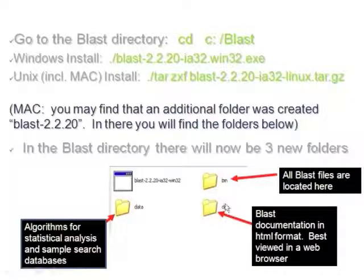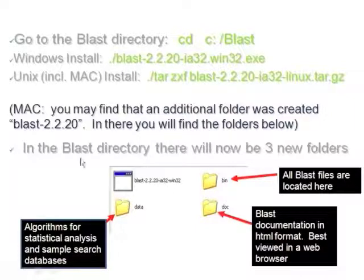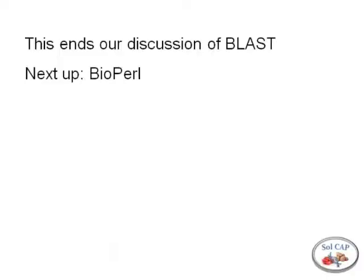The bin folder contains most of the BLAST files and the executable programs. The document folder contains documentation in HTML format. The data folder doesn't contain sequence data — it contains algorithms used in the BLAST program. In the UNIX installation, a new folder called BLAST-2.2.20 is created, and my recommendation is that you rename it to simplify path statements. You may even want to call it your BLAST folder and work straight out of there.